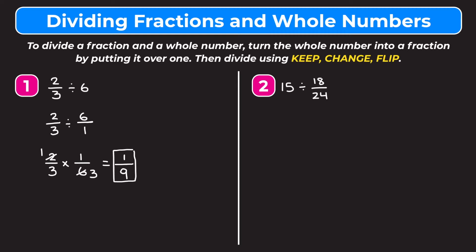Example 2 is 15 divided by 18/24. This time we have the whole number divided by a fraction, but we use the same method. We change 15 into a fraction by putting it over 1, keeping the rest of the problem the same: divided by 18/24. Now we keep-change-flip: keep 15 over 1, change division to multiplication, and flip 18/24 to become 24 over 18. Now we see if we can cross-reduce or simplify.